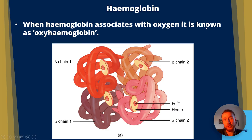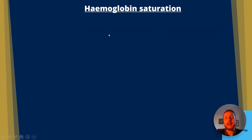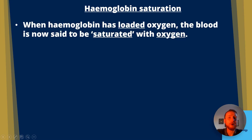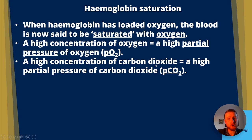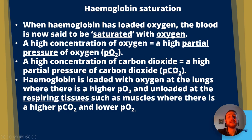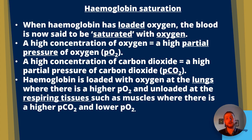When haemoglobin associates with oxygen, it's known as oxyhaemoglobin. The prosthetic or heme group is what gives blood its red colour. When haemoglobin has loaded oxygen, the blood is said to be saturated with oxygen. A high concentration of oxygen means a high partial pressure of oxygen — denoted PO₂. Similarly, a high concentration of carbon dioxide is a high partial pressure of CO₂, denoted PCO₂. Haemoglobin is loaded with oxygen at the lungs, where there's a higher partial pressure of oxygen, and unloaded at the respiring tissues such as the muscles, which use oxygen for aerobic respiration.